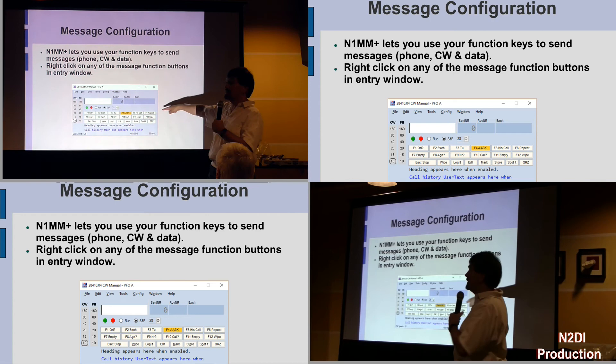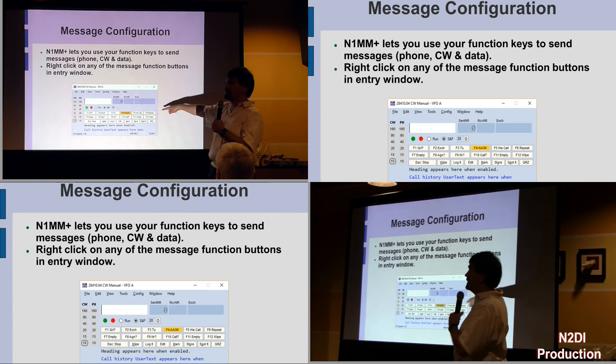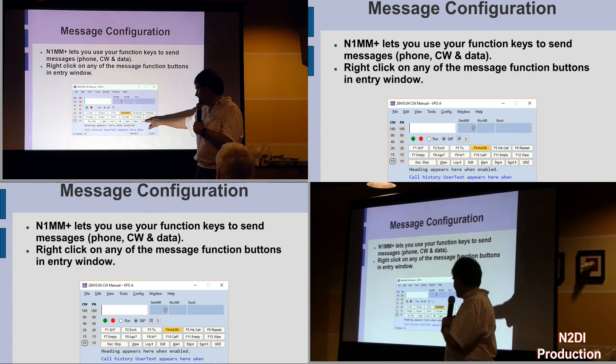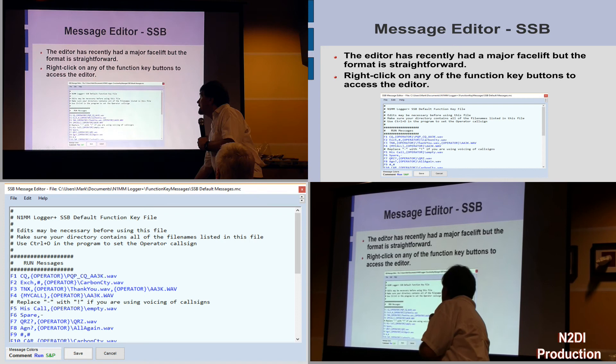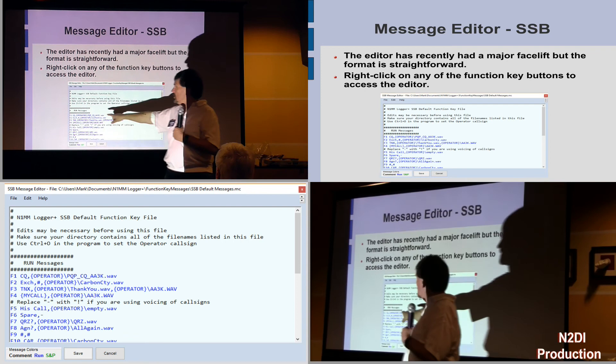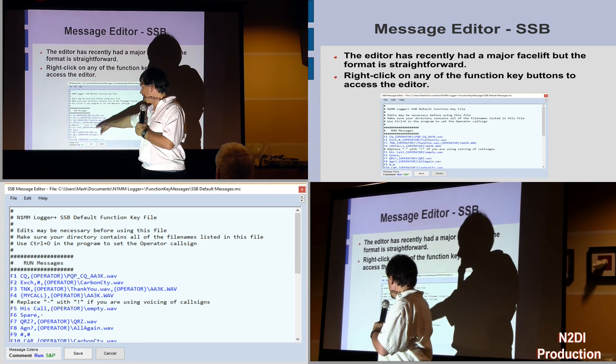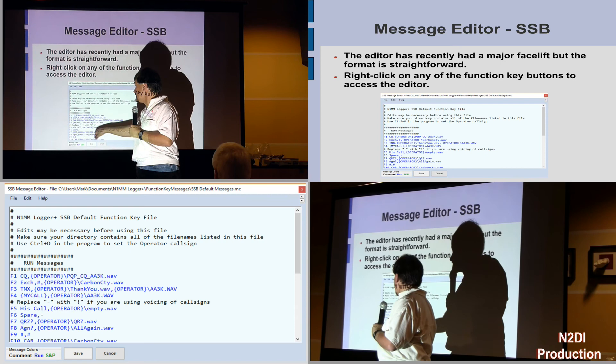The function keys handle CW, data modes — if you're running PSK — or voice. If you right-click on any of these 12 buttons, you'll bring up an editor window where you have two banks of messages: if you're running, or if you're just doing search and pounce. It's set up pretty much the same. F1 — I want CQ to be on the button caption. I use a macro called operator.